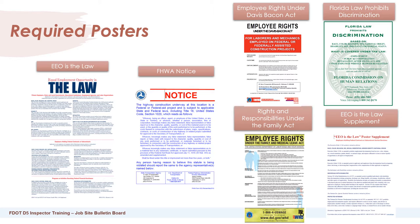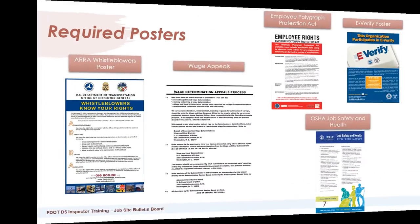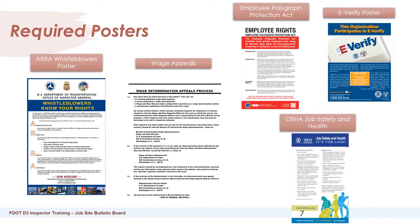These are some examples of the required posters: EEO is the Law, FHWA notice, Employee Rights under the Davis-Bacon Act, Florida Law Prohibits Discrimination, Rights and Responsibilities under the Family Act, EEO is the Law Supplement, RO Whistleblowers Poster, Wage Appeals, Employee Polygraph Protection Act, E-Verify Poster, and the OSHA Job Safety and Health poster. Note that the RO Whistleblowers Poster is not a requirement to be on the board, but is included here for reference.